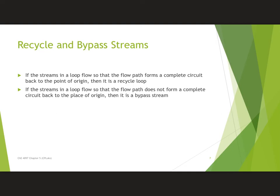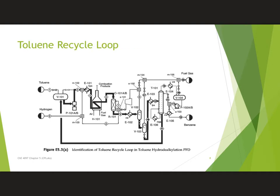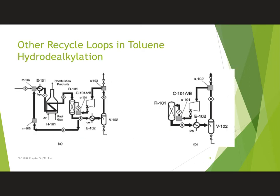Recycle and bypass streams can complicate things, and sometimes it's hard to identify whether it is a recycle or a bypass. A recycle takes material from late in the process and brings it back to early in the process — you can tell by tracing your component and finding a loop that comes all the way back to itself. If it doesn't completely come back to the point of origin, then it's bypassing a portion of the process. The toluene recycle loop is shown here, where some toluene continues on and gets recycled back, forming that loop.